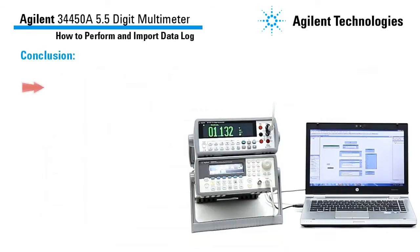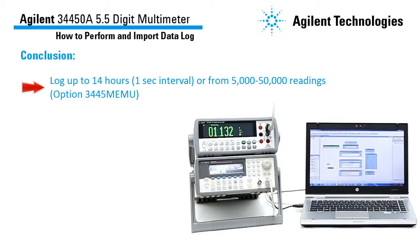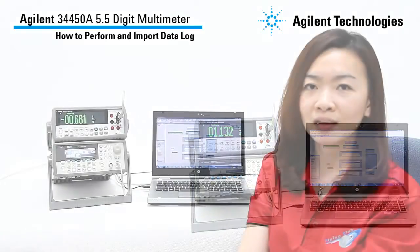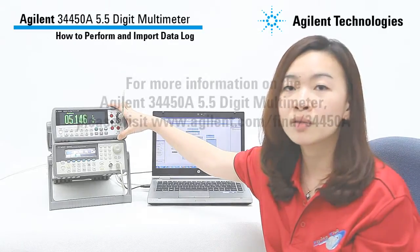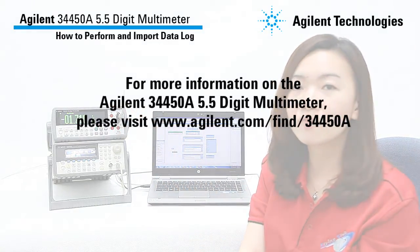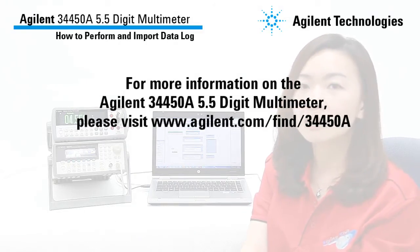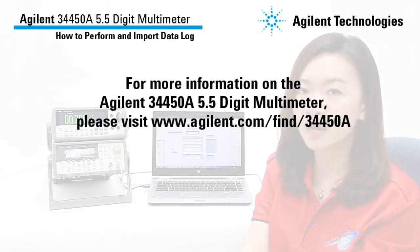The data logging function in the 34450A is extremely powerful. It can log up to 14 hours, from 5,000 readings up to 50,000 readings when you purchase the upgrade 3445MEMU. No complicated programming is needed, and at the end of logging you can view values, histogram and statistic data on the OLED display. You can also transfer log data over GPIB, USB or serial port to your computer. I hope you have learned how to set up the 34450A to perform data logging through this video. For more information on the Agilent 34450A 5.5-digit multimeter, please visit www.agilent.com/find/34450A. Thank you for watching.